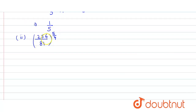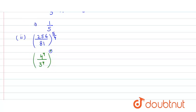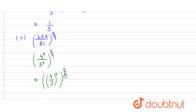Now, 256 can be written as 4 raised to power 4, and 81 can be written as 3 raised to power 4. So the expression becomes 4 divided by 3, raised to power 4, and then that is raised to power 5 by 4.